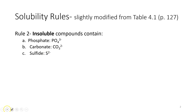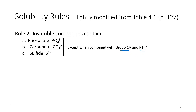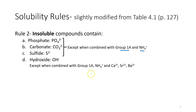Phosphate, carbonate, and sulfide compounds are insoluble except when combined with a group 1A cation or ammonium. And there's one more rule for insoluble compounds: hydroxide. All hydroxides are insoluble except when combined with group 1A or ammonium and these three cations. So if you see a hydroxide with one of those as a cation, it would be soluble.